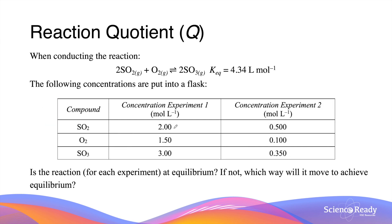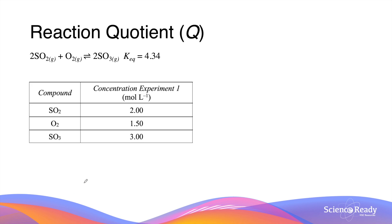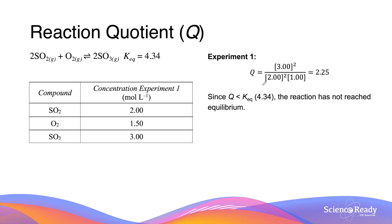Let's reinforce what we discussed through an example. We have a reversible reaction between sulfur dioxide, oxygen gas, and sulfur trioxide. This is the equilibrium constant of the equation. We have two experiments from which concentrations of all three gases are determined as shown by the table. The question is: is the reaction for each experiment at equilibrium? If not, which way will the reaction move to achieve equilibrium? Let's take a look at experiment 1 first. If we write the reaction quotient, we'll have the product sulfur trioxide in the numerator and the reactants, sulfur dioxide and oxygen gas, in the denominator.